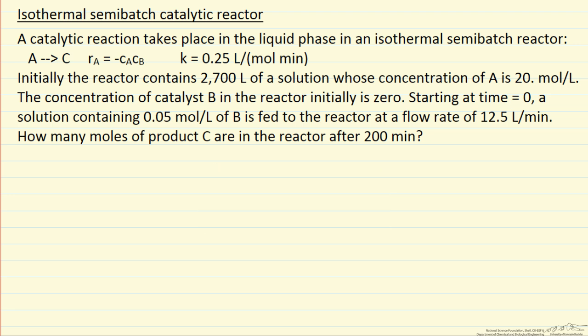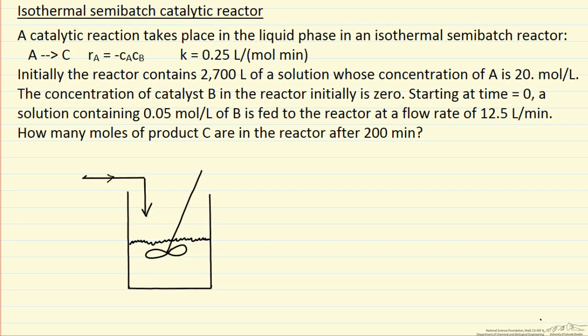The first thing we want to do in all types of problems like this is draw a diagram that represents our system, and label what we know. Here's a representation of a semi-batch reactor. We know the initial volume in the reactor, 2700 liters.